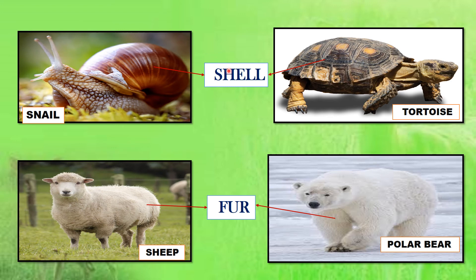The next adaptation in body covering is shell. Many animals such as tortoises, snails and turtles are protected by a hard shell. When these animals sense danger, they withdraw their head and feet into the shell. Fur is another adaptation — sheep and polar bears have wool or fur that protects them from cold climate and keeps them warm.